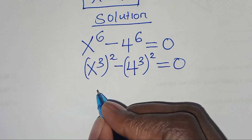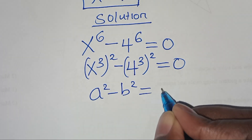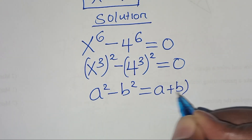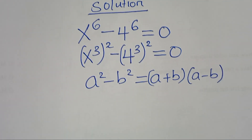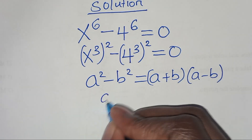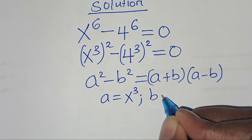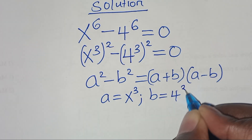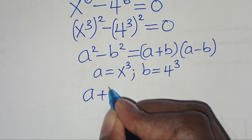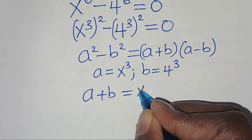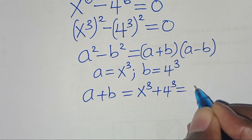The next step is to express x to the power 6 as (x³)², subtract 4 to the power 6 expressed as (4³)², equal to 0. This is in the form of a squared minus b squared, which equals (a + b)(a - b), where a = x³ and b = 4³. So a + b gives x³ + 4³ = 0.